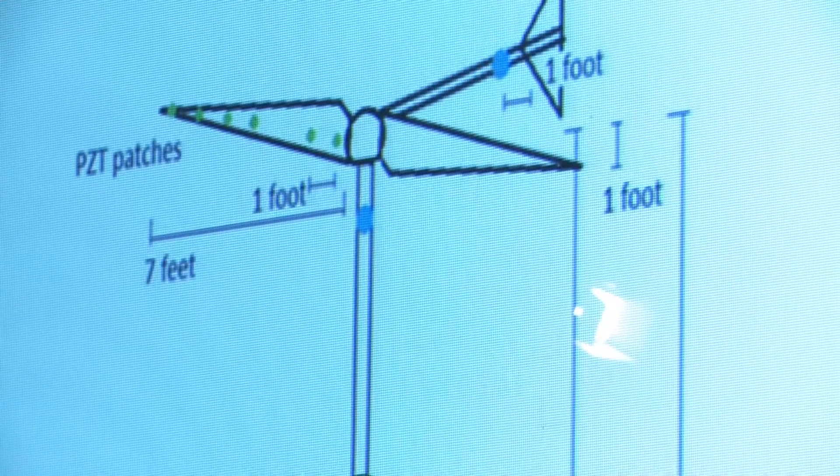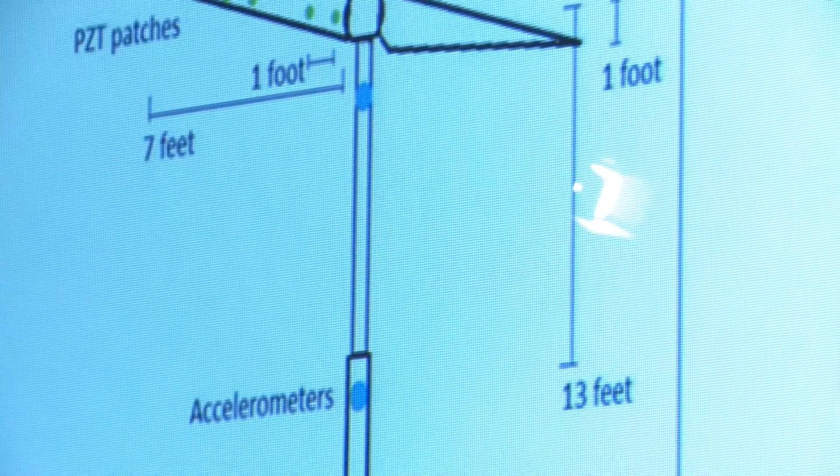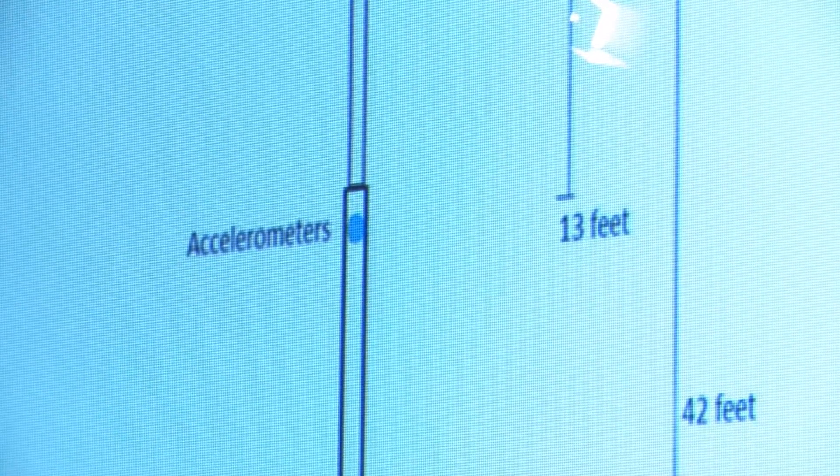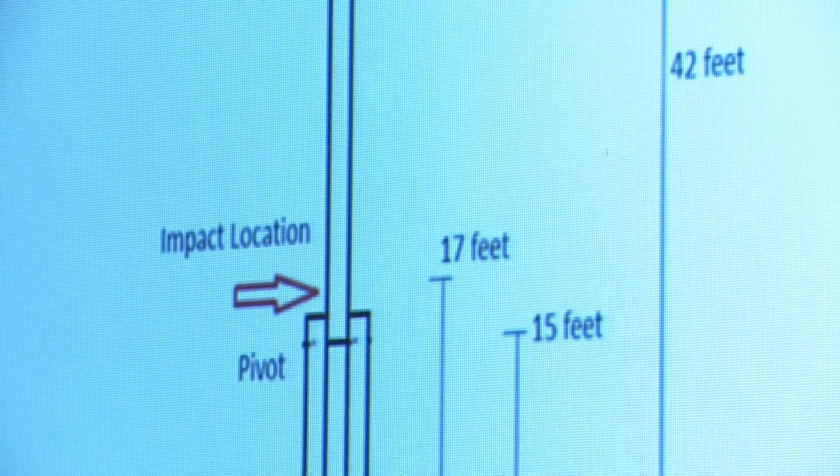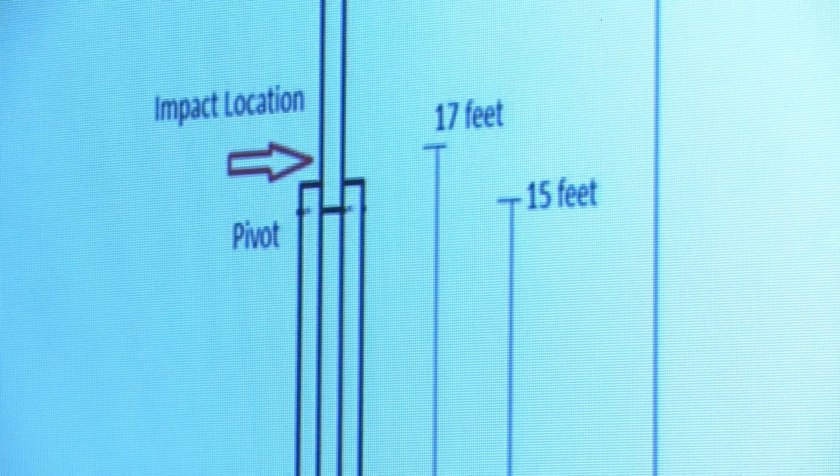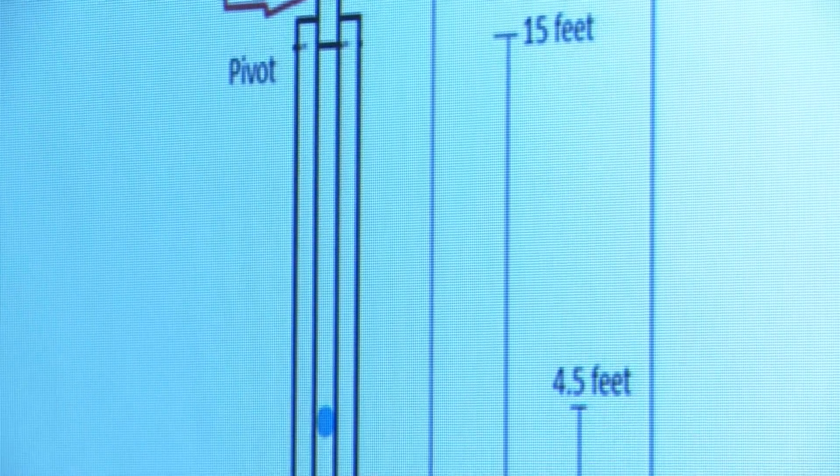The way they want to go about doing this is by identifying damaged blades before it leads to catastrophic failure or anything like that.